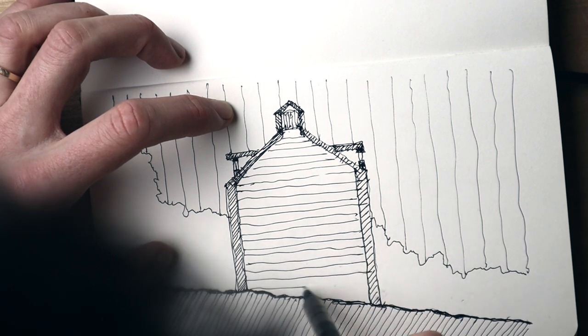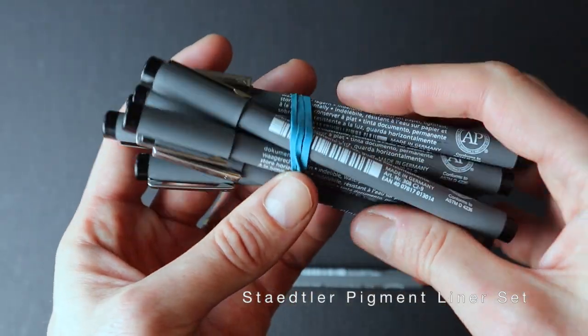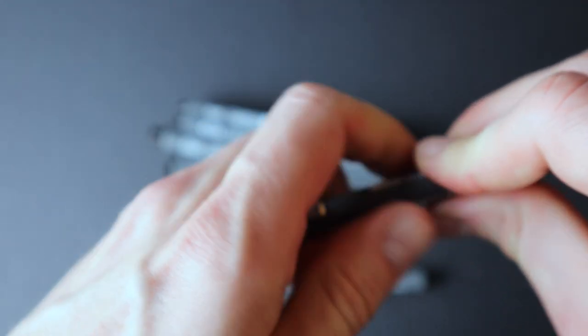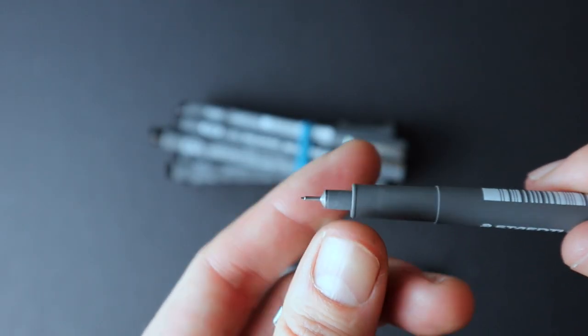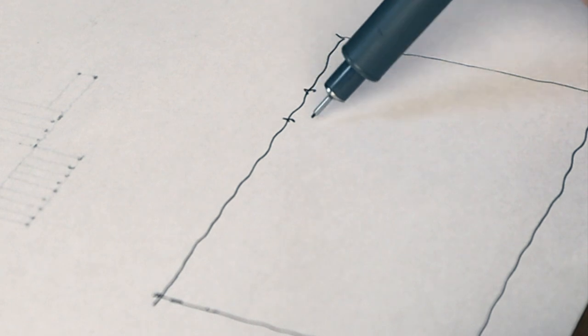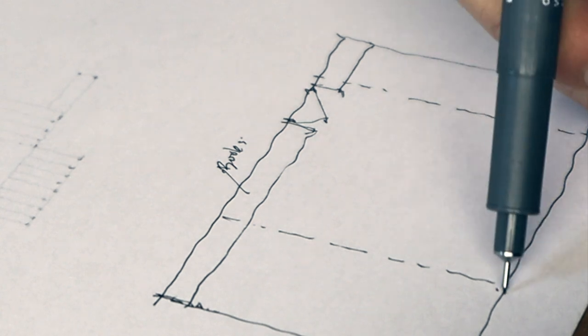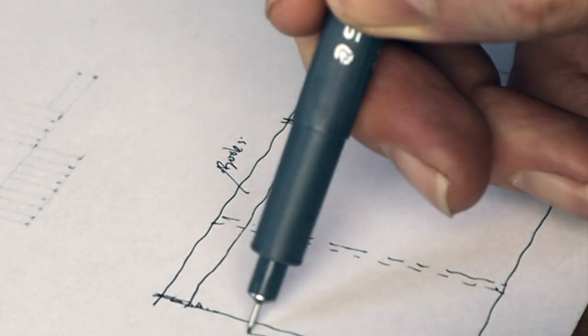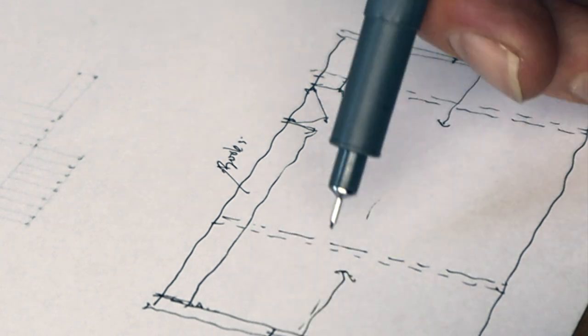Next up is this Staedtler Pigment Liner Pen Set, and this set comes with 12 different pens with weights ranging in size between 0.05mm to 2mm. I find these pens are great for their precision when writing, drawing, or just doing a quick sketch. They provide a nice smooth flow of ink and are both water and fade resistant.